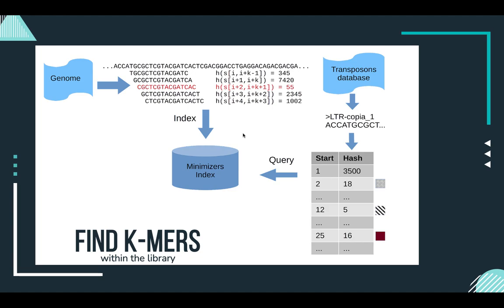The idea here is not to find minimizers, but just to use that hashing function to know the location of each k-mer in the database. After this indexing step, we have a query and an index that are related in terms of the hashing values of that function.